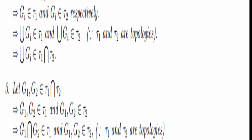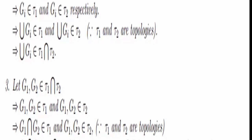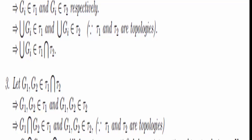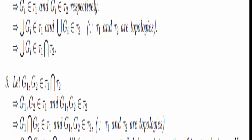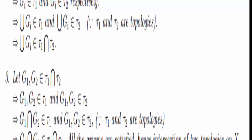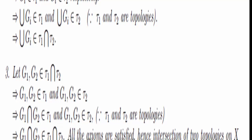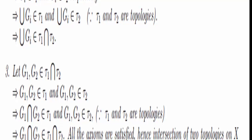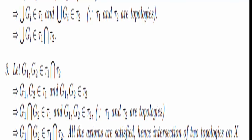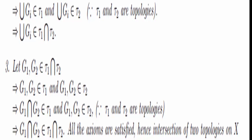We have a finite number of open sets in τ₁, which means their intersection is also in τ₁ because τ₁ is a topology on X. And we have a finite number of open sets in τ₂, so the intersection also lies in τ₂ because τ₂ is a topology. So the intersection is in τ₁ and the intersection is in τ₂ — so the intersection is in τ₁ ∩ τ₂. It's always fun to have these big intersection symbols.